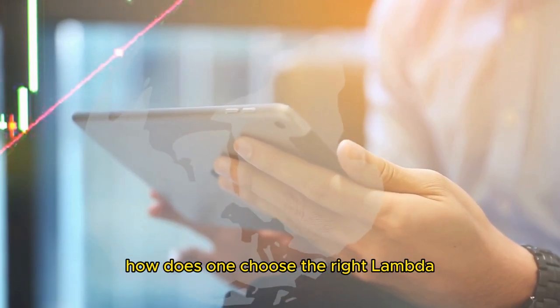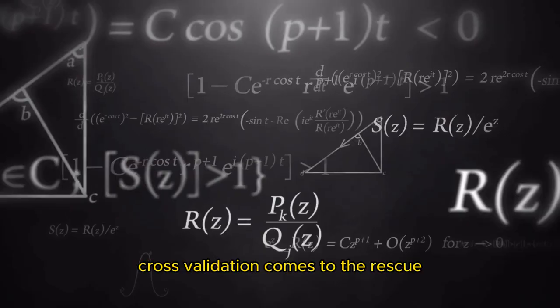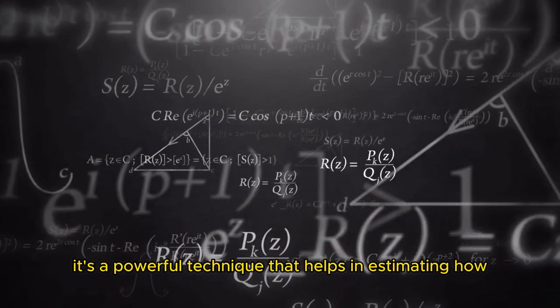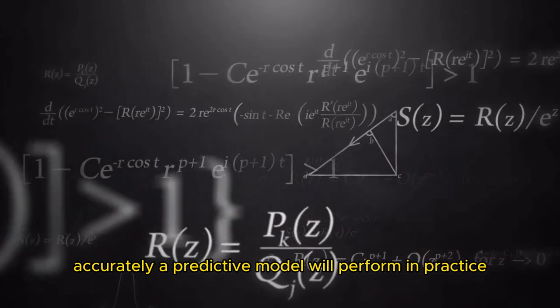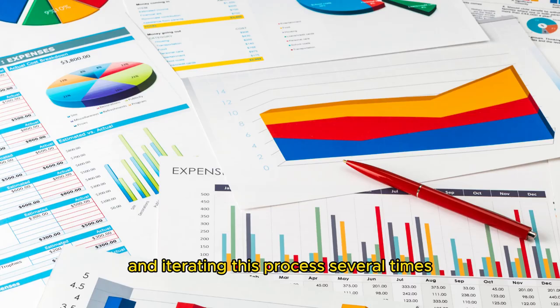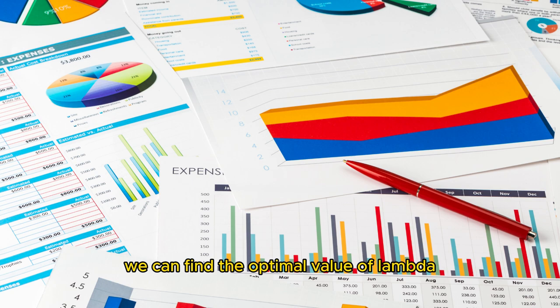Now you might be asking yourself, how does one choose the right lambda? Glad you asked. Cross-validation comes to the rescue. It's a powerful technique that helps in estimating how accurately a predictive model will perform in practice. By dividing the data set into two parts, training and validation sets, and iterating this process several times, we can find the optimal value of lambda that minimizes the prediction error.